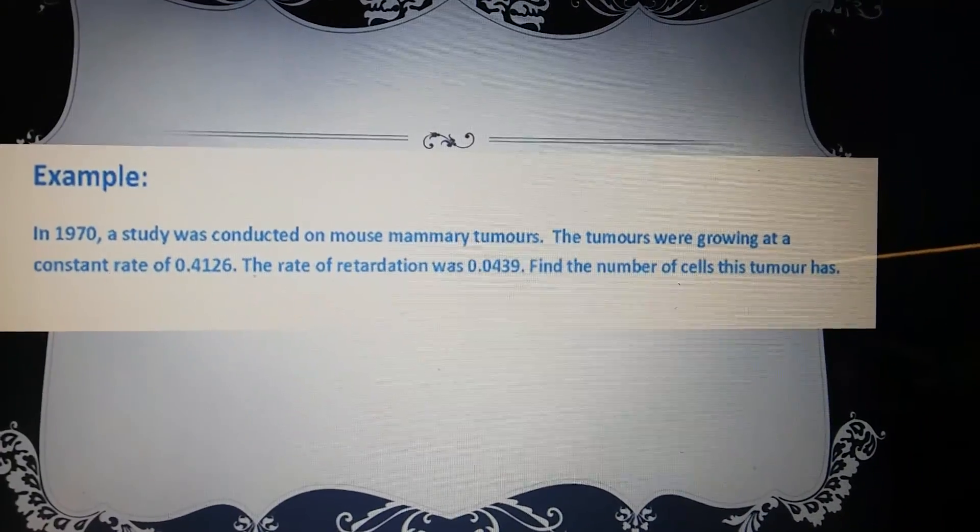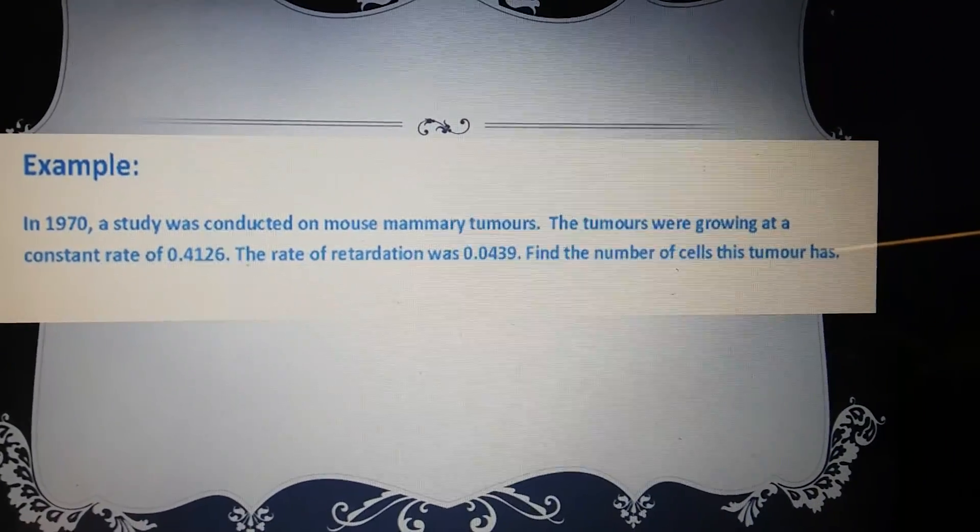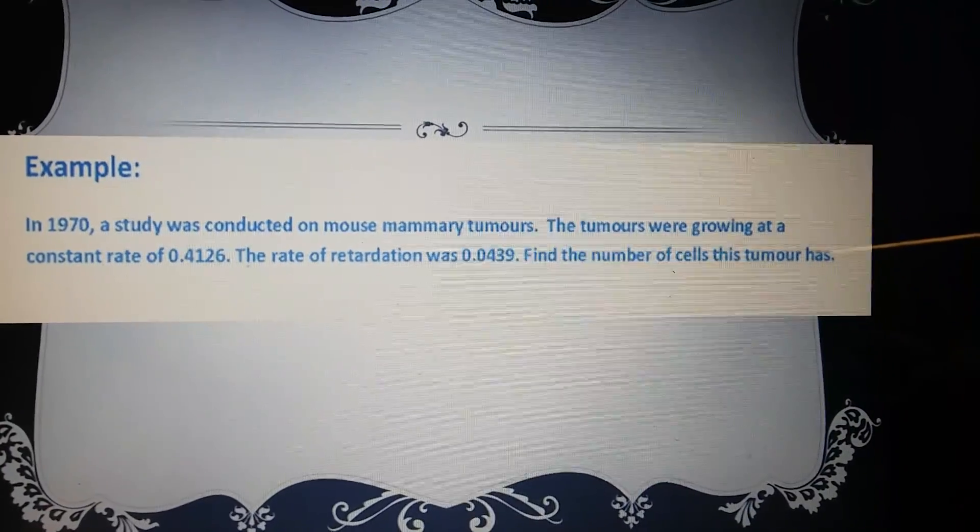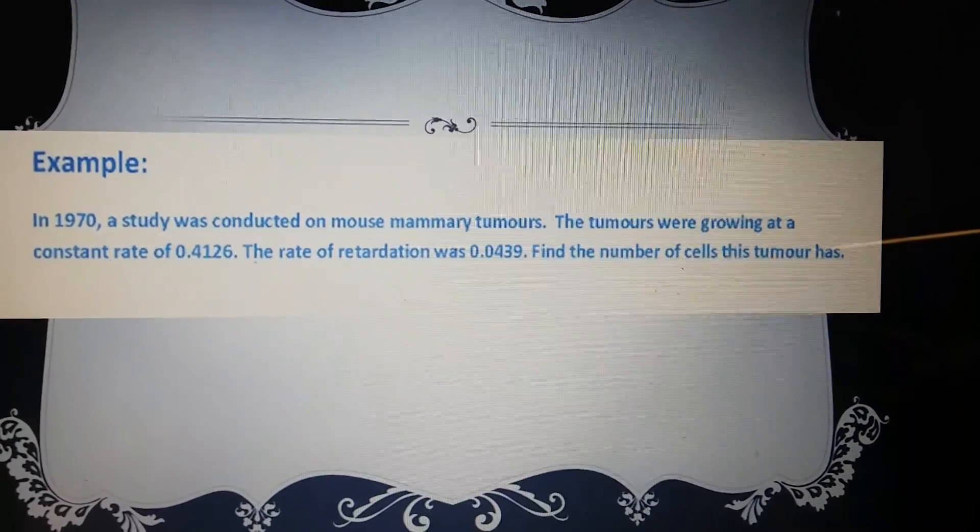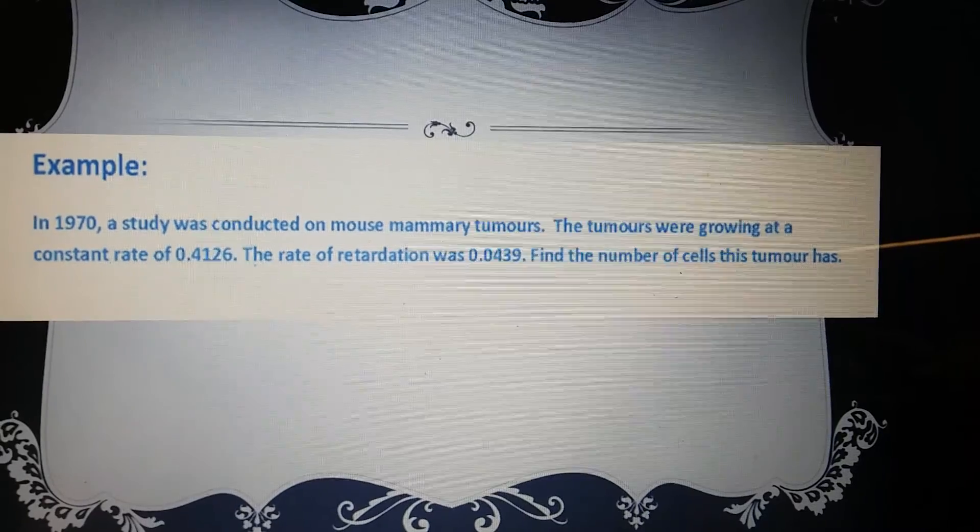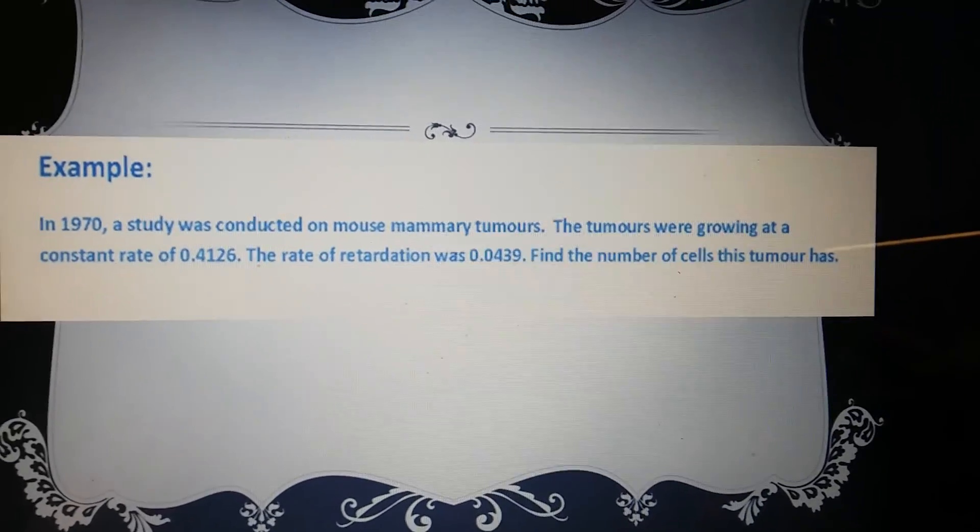Example. In 1970, a study was conducted on hemoroid tumors. Tumors were growing at a constant rate of 0.4126. The rate of retardation was 0.0439. Find the cells for this tumor.